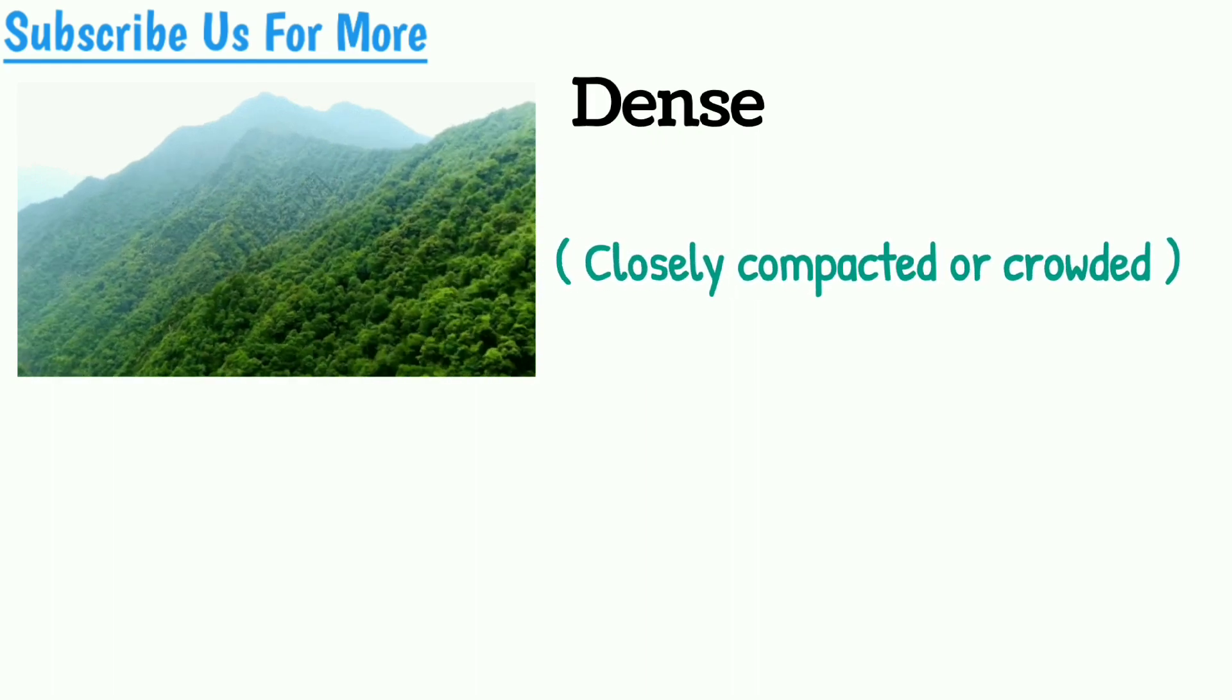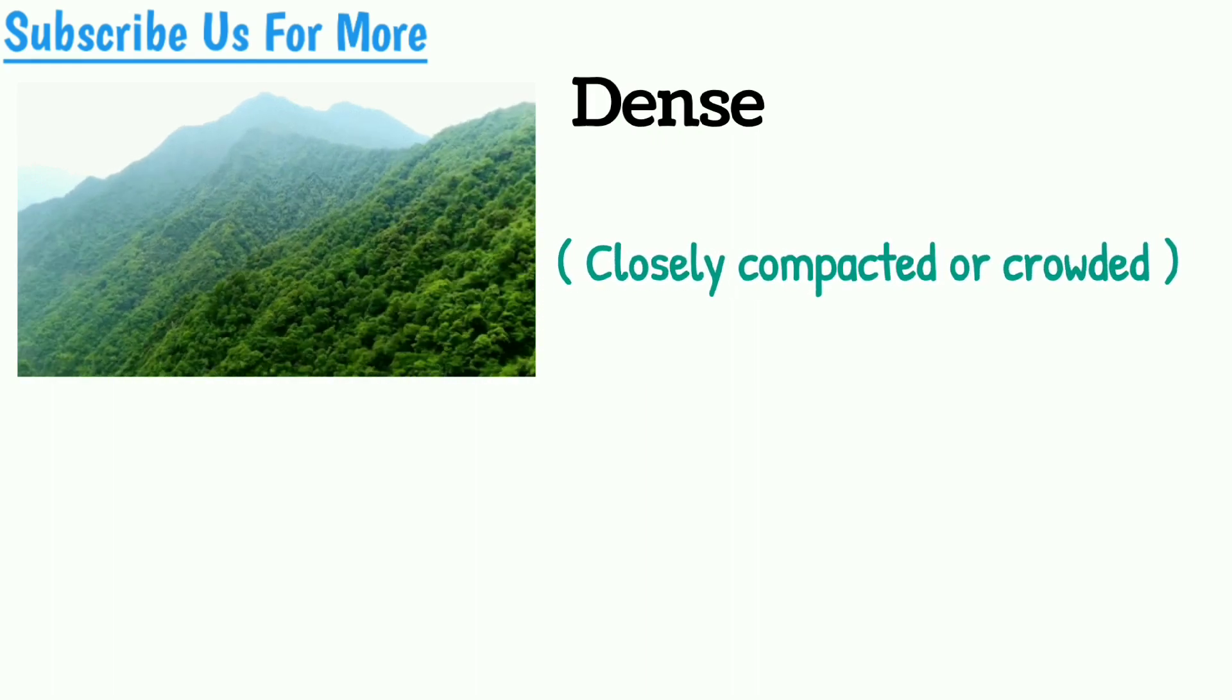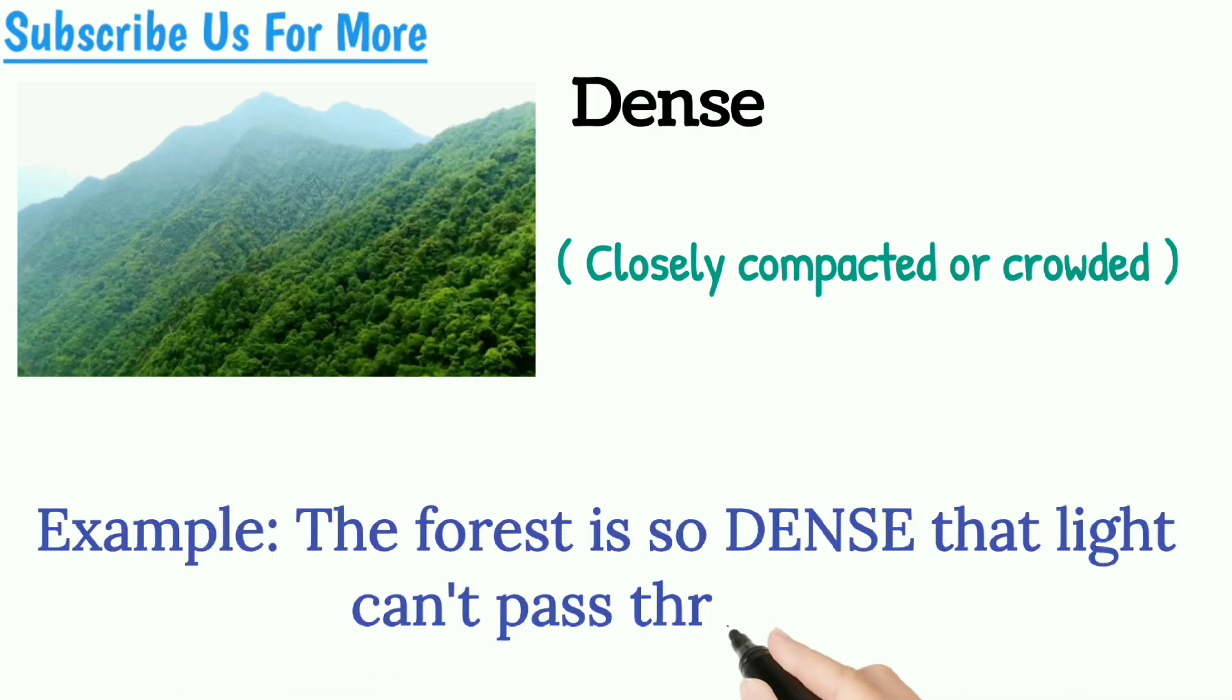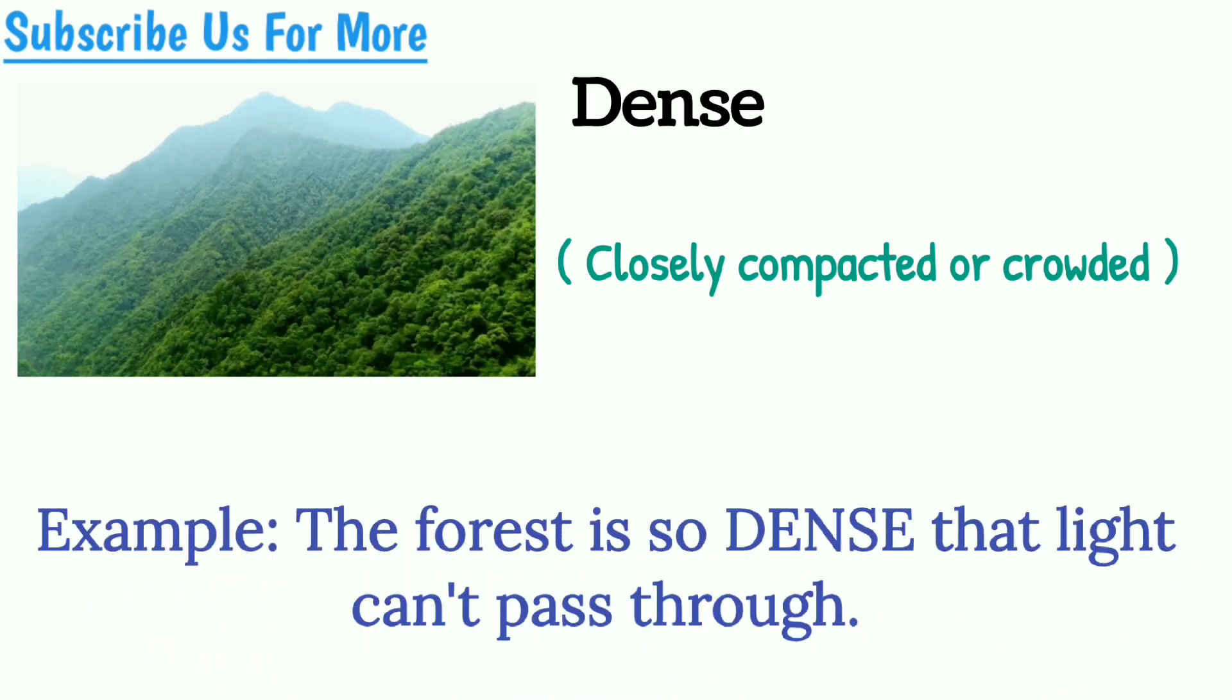Dense meaning: closely compacted or crowded. Example: the forest is so dense that light can't pass through.